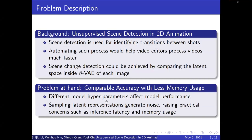In the movie industry, automated scene change detection could help video editors process videos much faster with less effort. This automation could be achieved by comparing the latent space inside the Beta VAE model of each image. Besides the difficulty of tuning an appropriate model, sampling latent representations from a continuous distribution could generate noise for calculating divergence.